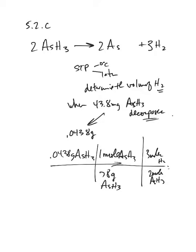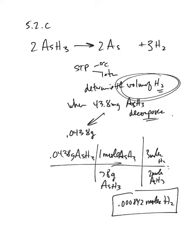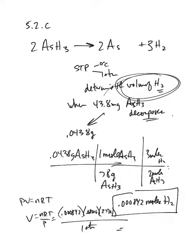0.0438 divided by 78 times 3 divided by 2. It's a small number, but it's 0.000842 moles of H2. Okay. Now, we're going to use the ideal gas law, because guess what? They asked me for a volume. So, PV equals NRT. The volume is NRT over P. So, the moles is 0.000842. R is 0.08206. The temperature is 273 K. The pressure is 1 ATM. 0.000842 times 0.08206 times 273. I get 0.0189 liters. And that is that, I think. Please give me a call if you have any questions.